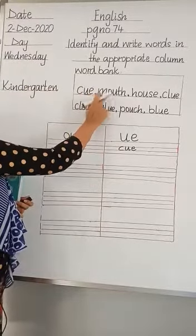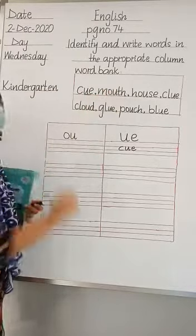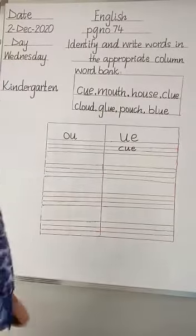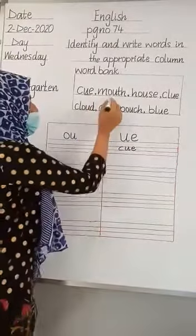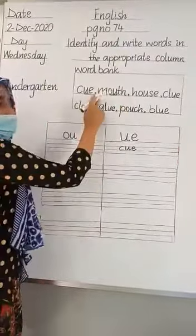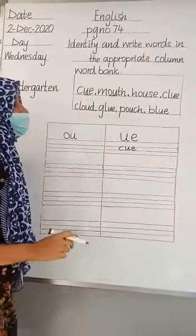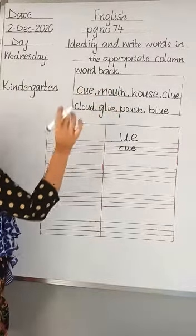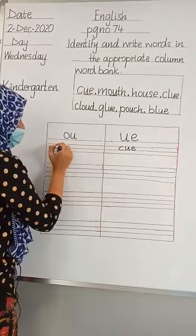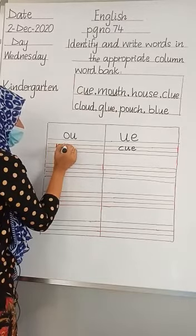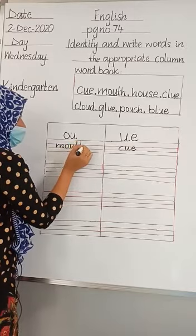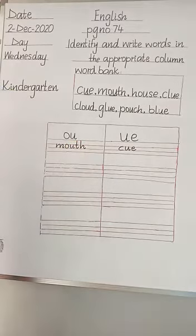Now come to the next word. The next word is M-O-U-T-H, 'mouth'. Look at the word 'mouth'. The word 'mouth' has an 'ow' sound. So we have to write the word 'mouth' in the column of 'ow' sound because the word 'mouth' has an 'ow' sound. M-O-U-T-H.